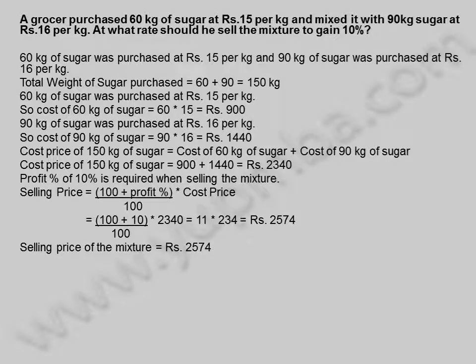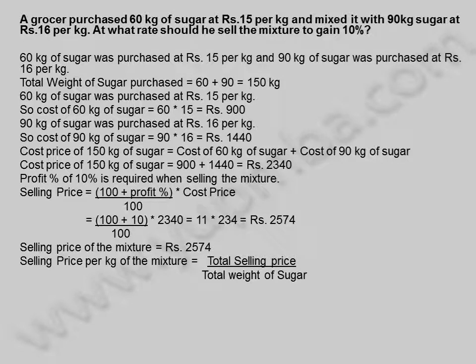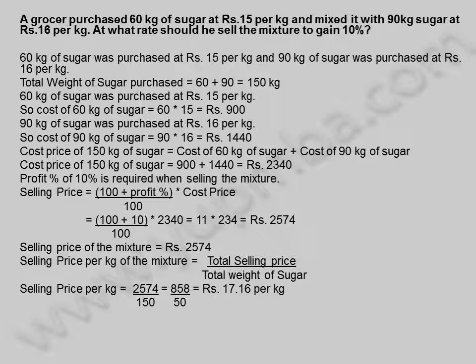Selling price of the mixture is 2,574 rupees. Selling price per kilogram of the mixture is equal to total selling price divided by total weight of sugar, which is 2,574 divided by 150, equals 858 by 50, equals 17.16 rupees per kilogram. The mixture must be sold at 17.16 rupees per kilogram to gain 10 percent.